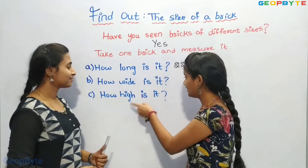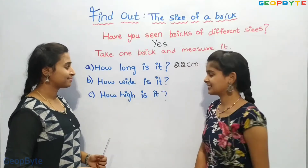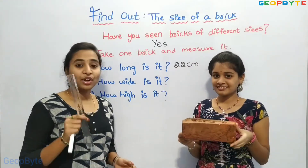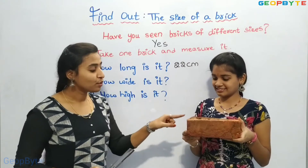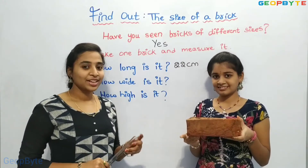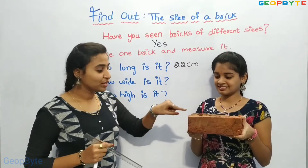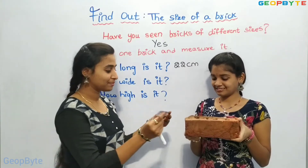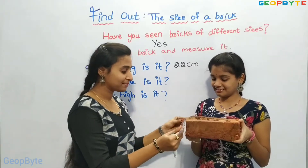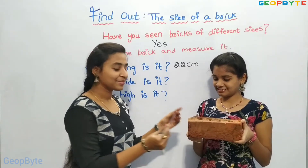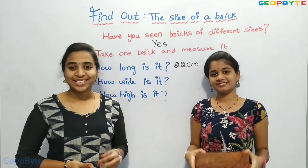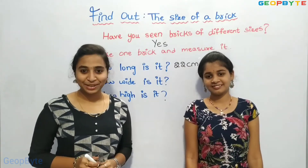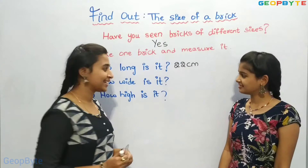How wide is it? Let us measure. Children, wide means width. So let us measure the width of the brick. Yes, the width of the brick is 10 centimeters. Let us write it down.